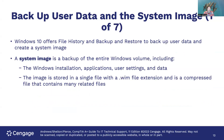Backing up user data and the system image. Windows 10 offers File History and Backup and Restore to back up user data and create a system image. A system image is a backup of the entire Windows volume, including the Windows installation, all applications, user settings, and data. The image is stored in a single file with a WIM file extension and is compressed to keep it as small as possible.